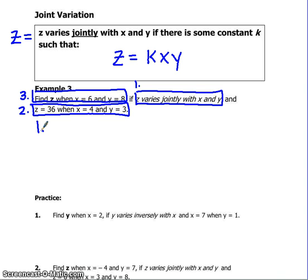Step 1. Z varies jointly with X and Y. It means we write the formula Z equals K times X times Y.